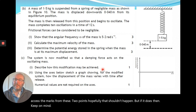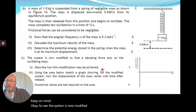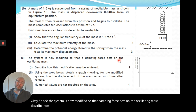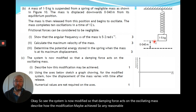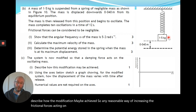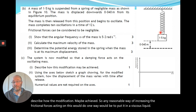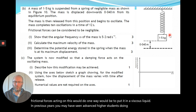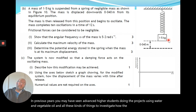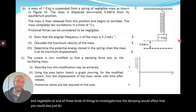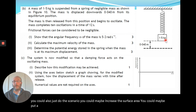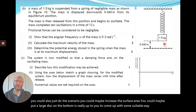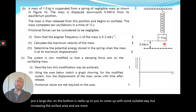The system is now modified so that a damping force acts on the oscillating mass. Describe how the modification may be achieved. Any reasonable way of increasing frictional forces would do — one way is to put the mass in a viscous liquid. You could also increase the surface area, for example by putting a large disc on the bottom. Increasing surface area in a more viscous medium would be common approaches.